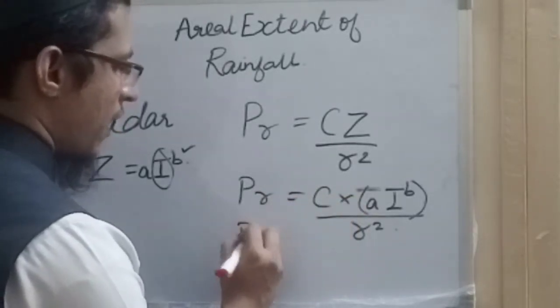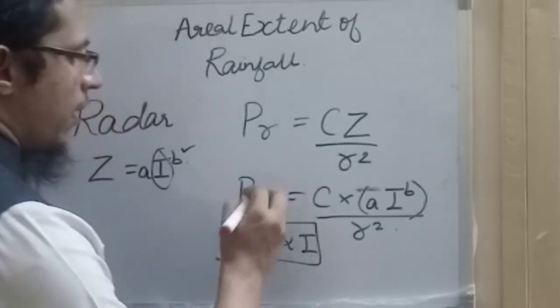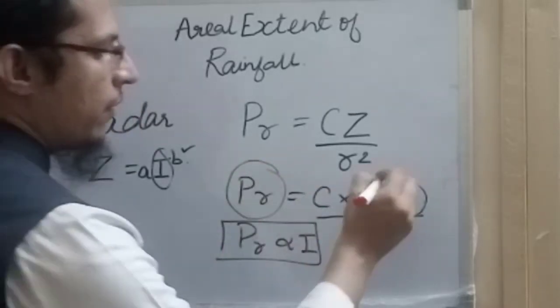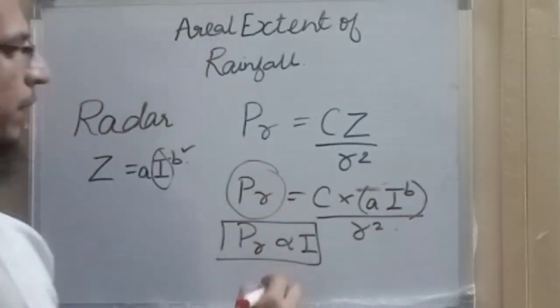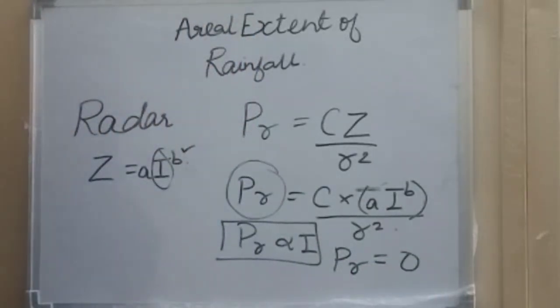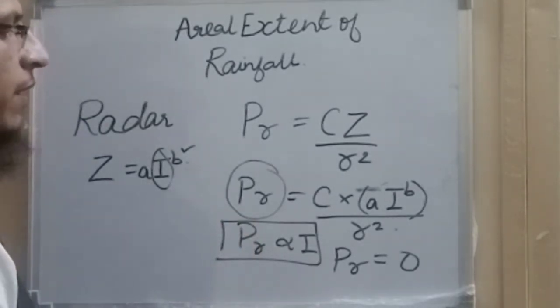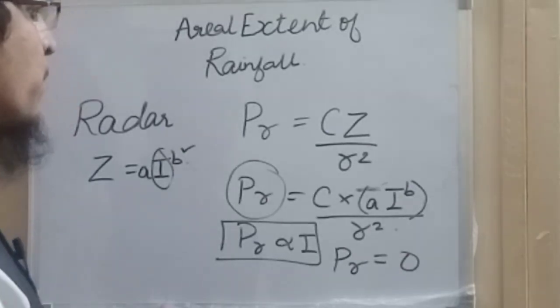Now you can see Pr is directly proportional to the intensity of rainfall. In case I is zero, then Pr will be zero. So when the area or distance at which rainfall is not occurring, there will be no echo power, and we can say up to this extent the rainfall is occurring.